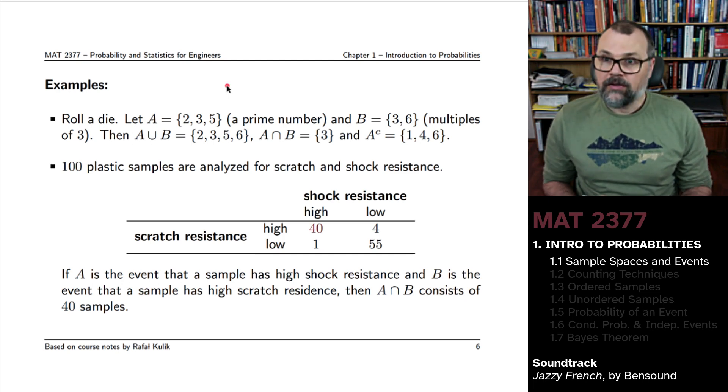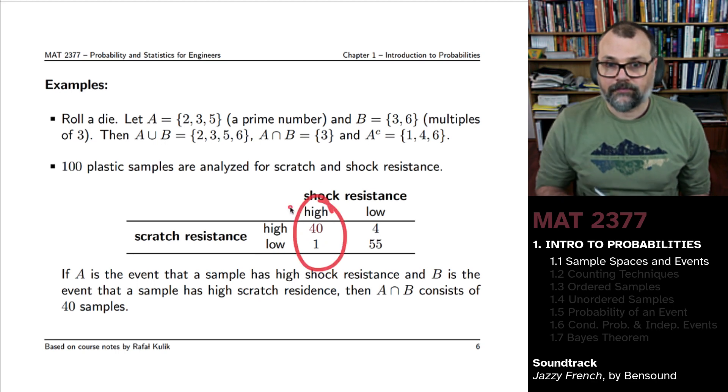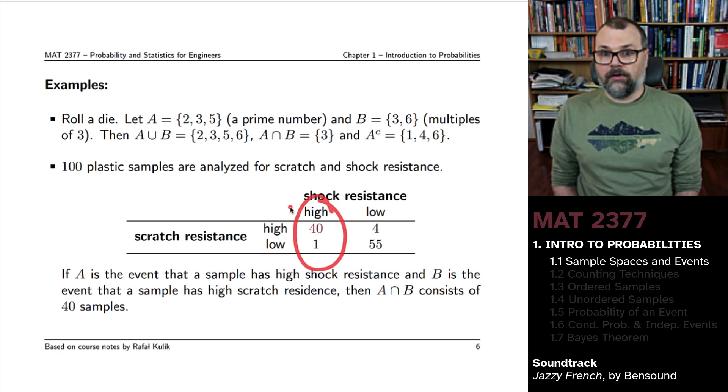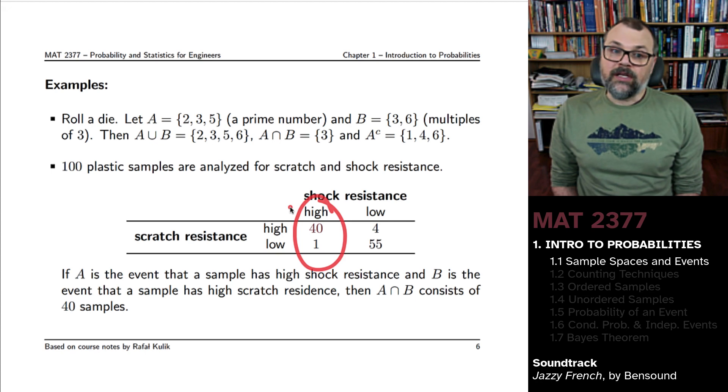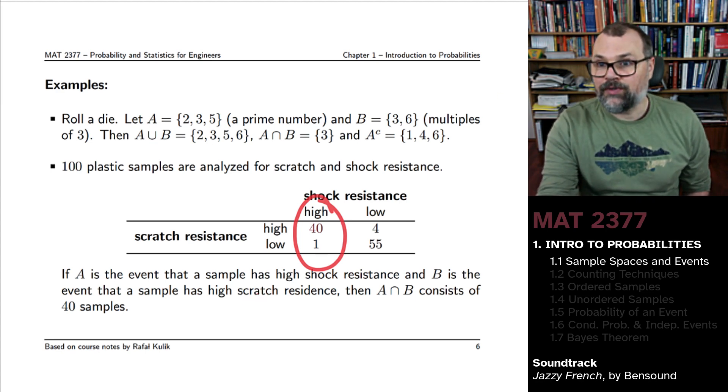We'll say that A is the event that the sample has high shock resistance. 41 of your specimens have high shock resistance, and B will be the event that it has high scratch resistance. There's 44 in total that have high scratch resistance.